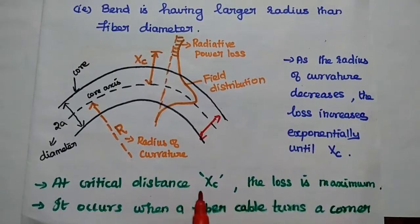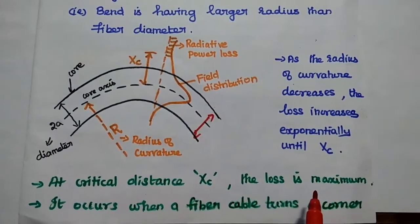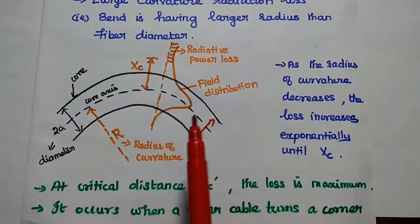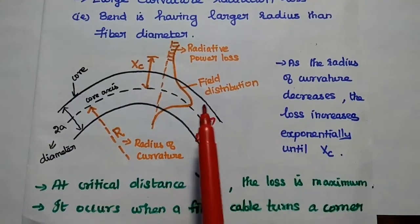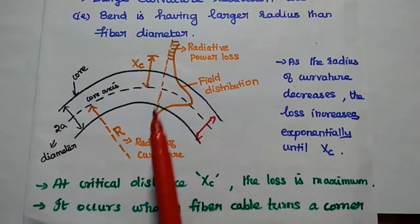At critical distance XC, the loss is maximum. This fiber loss occurs when the cable turns a corner. It only occurs at this corner.